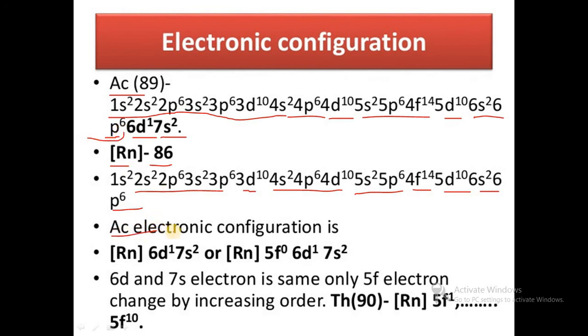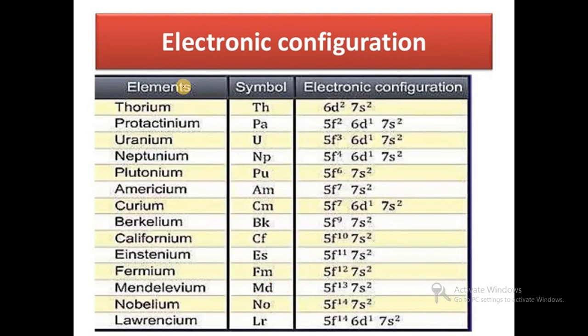Actinium electronic configuration becomes [Rn] 6d1 7s2 or [Rn] 5f0 6d1 7s2. The 6d and 7s electrons remain the same; only 5f electrons change by increasing order.